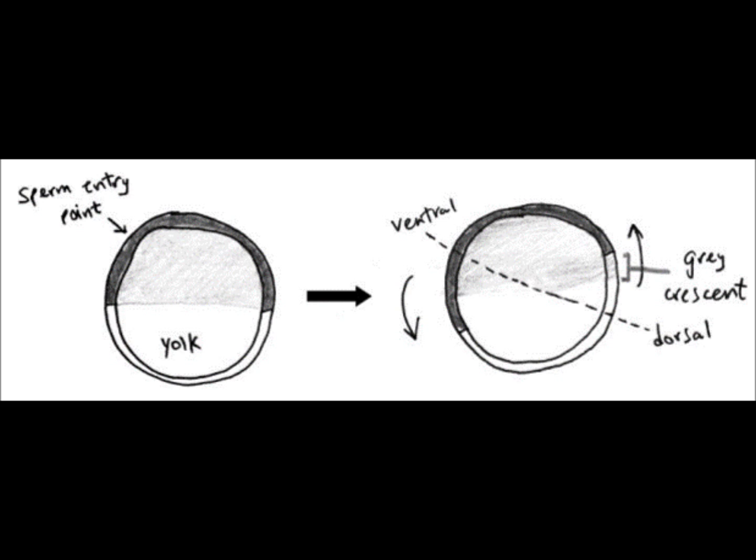For a little background, Xenopus embryos actually undergo something called cortical rotation during normal embryonic development and this is shown above. This is when the animal cells, which is the top half right where the sperm entry point is in the dark shaded area, actually rotate down towards the vegetal pole, which is the unshaded half of the embryo.